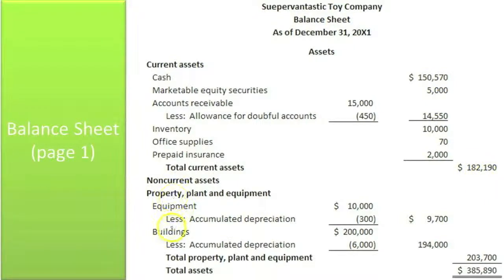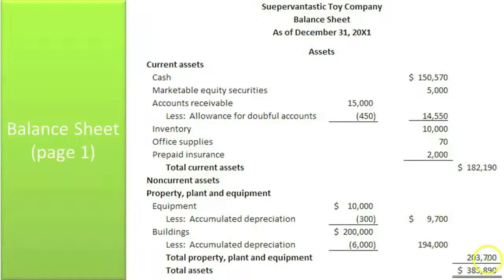Then we moved on to our non-current assets. We had to take equipment minus its contra asset for accumulated depreciation to get its book value. Same thing for buildings, to get its book value. Our total property and equipment is 203,700. Take our current assets, add to that our non-current assets, and we have 385,890. Now, if our liabilities and equity don't add up to that number, then we've done something wrong.